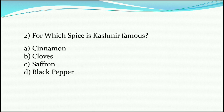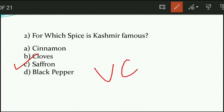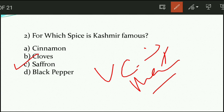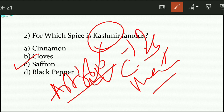Question number two: for which spice is Kashmir famous? It is famous for option C, that is saffron. Saffron is famous in the Kashmir region. It is red in color and it is very costly because everything is done manually. Regarding Kashmir, you should also know that it was under Article 370, which was abolished in 2019.